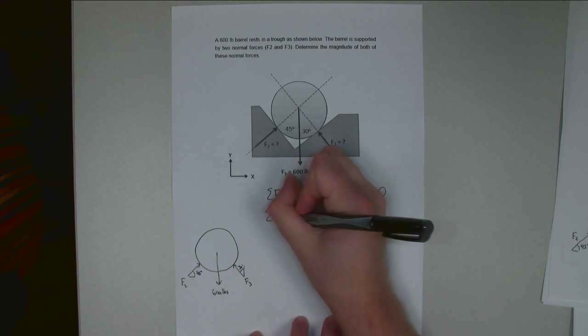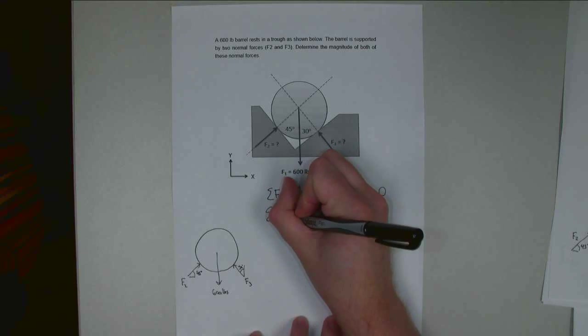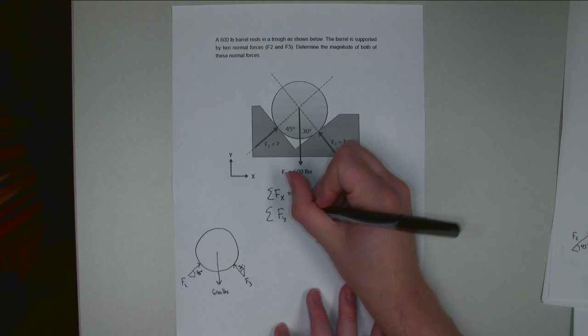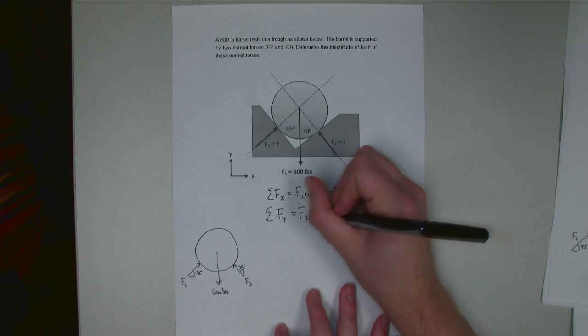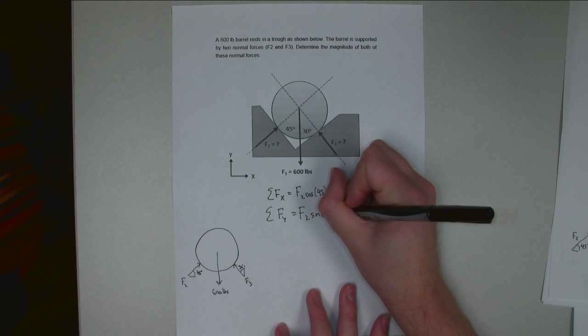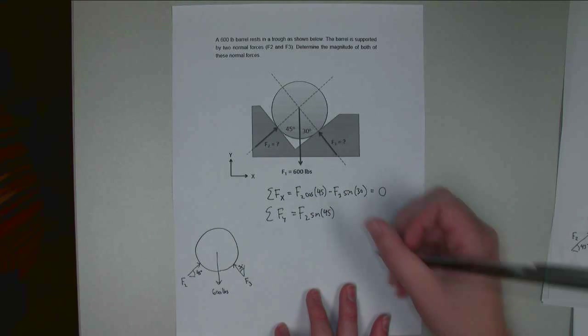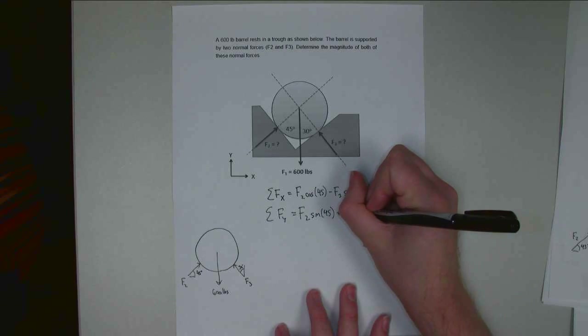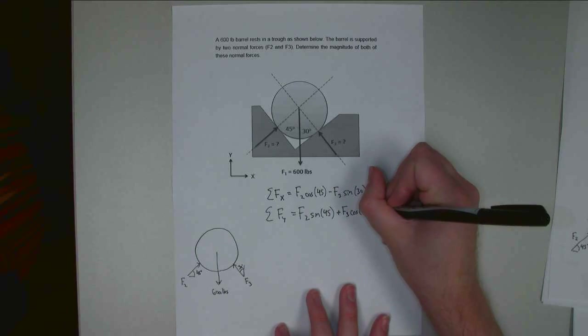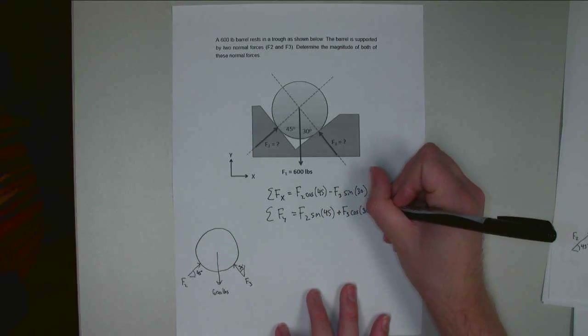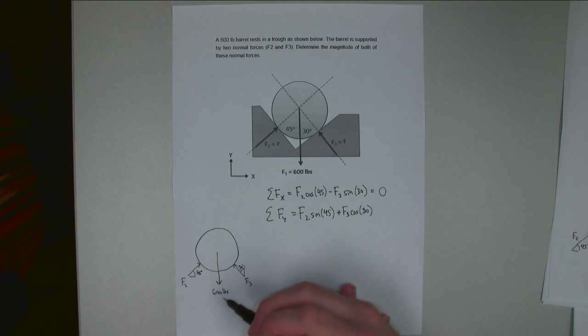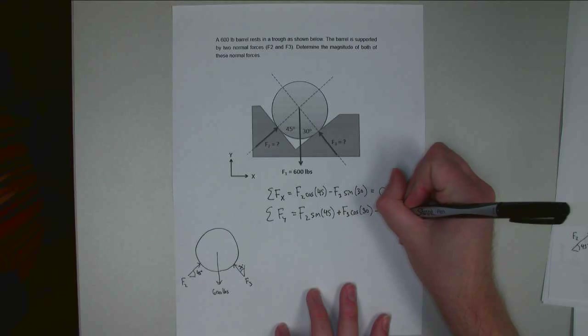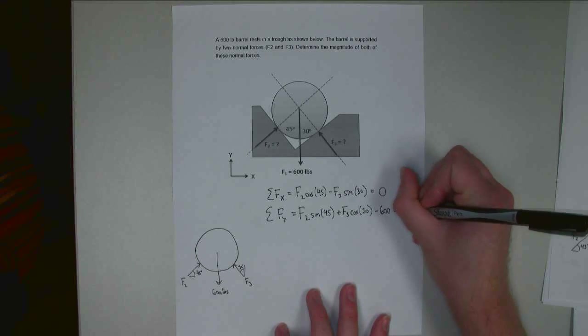Alright, let's do the same thing from the y direction. So sum of forces in the y direction, I'm going to have F2 times the sine of 45 degrees. That's the y component of F2. Plus F3 times the cosine of 30 degrees. And then I'm going to subtract off the gravity force is in the negative y direction. So minus 600 is equal to zero.